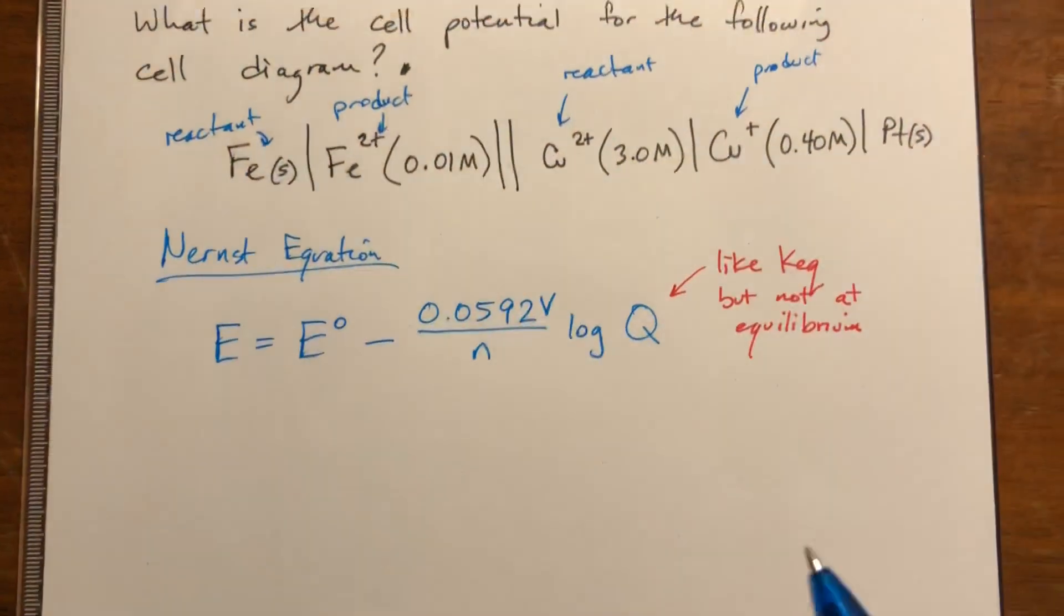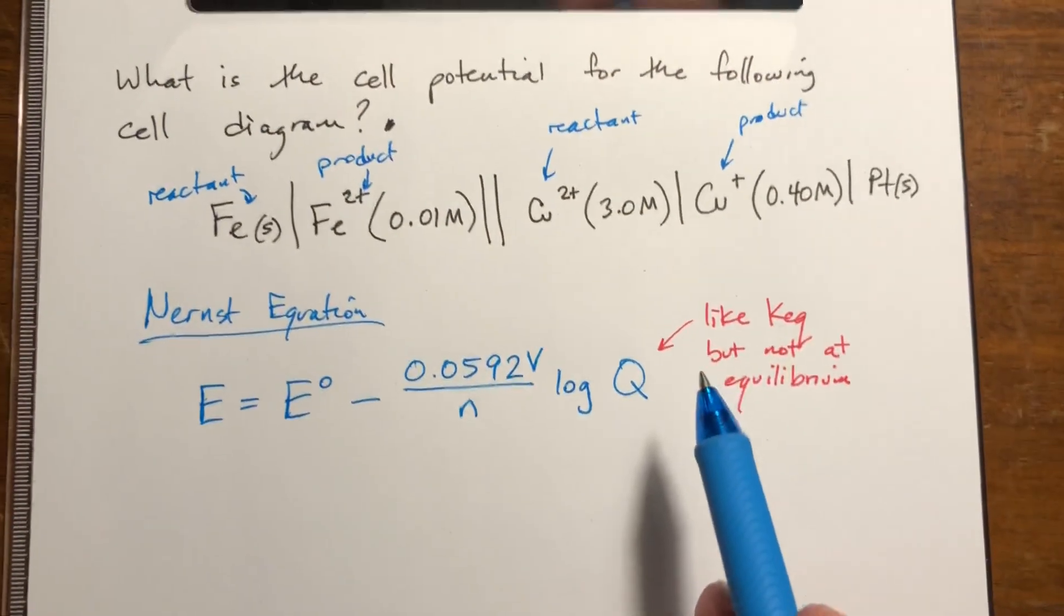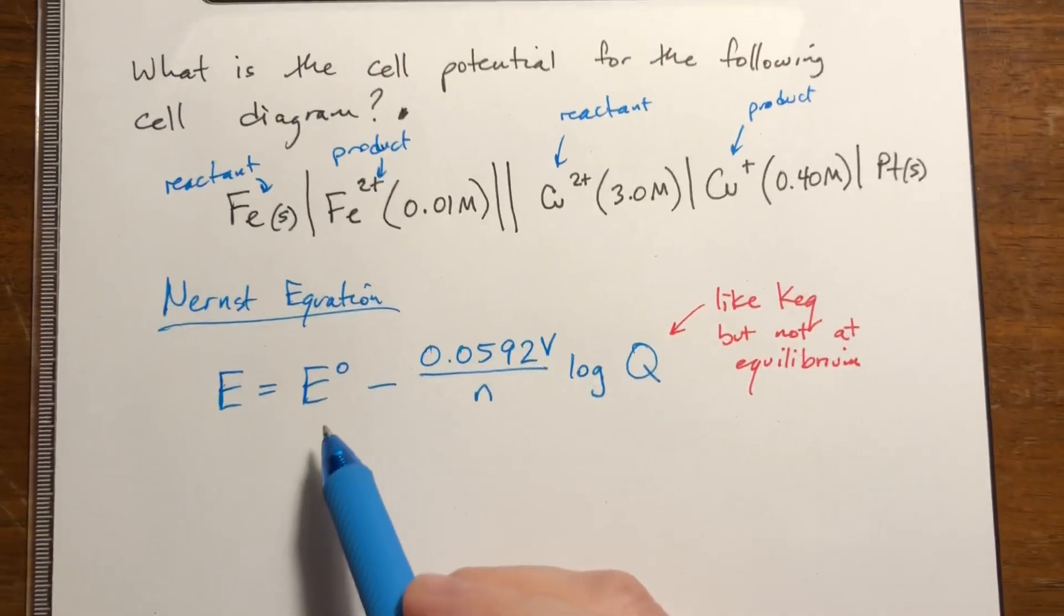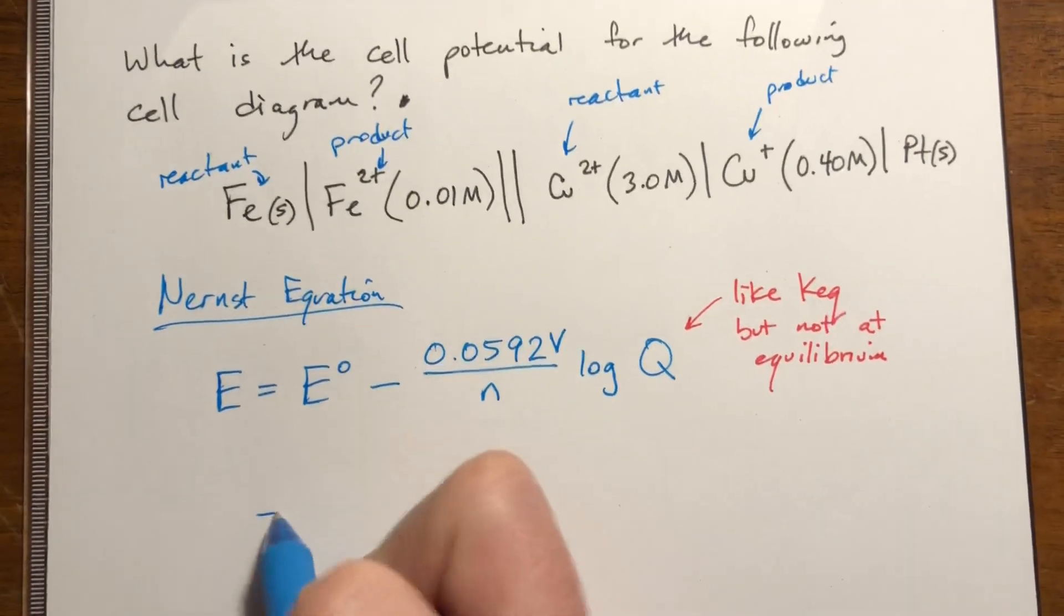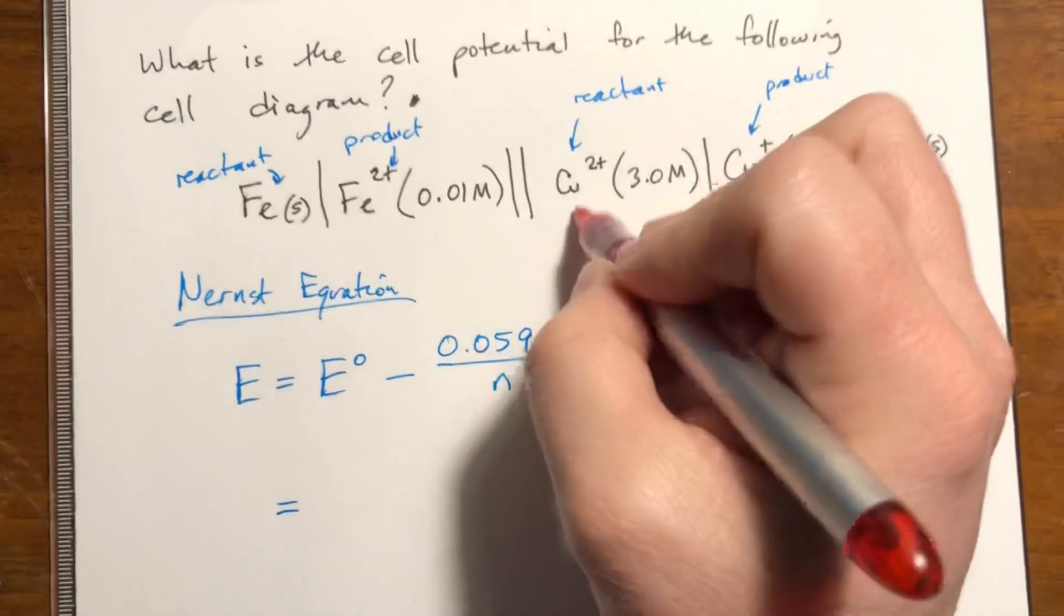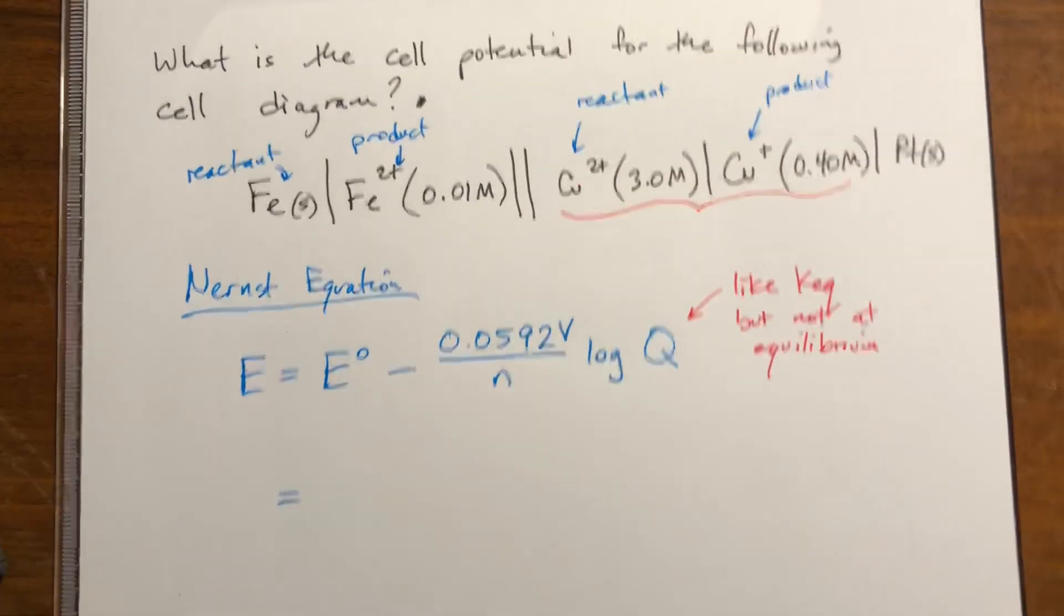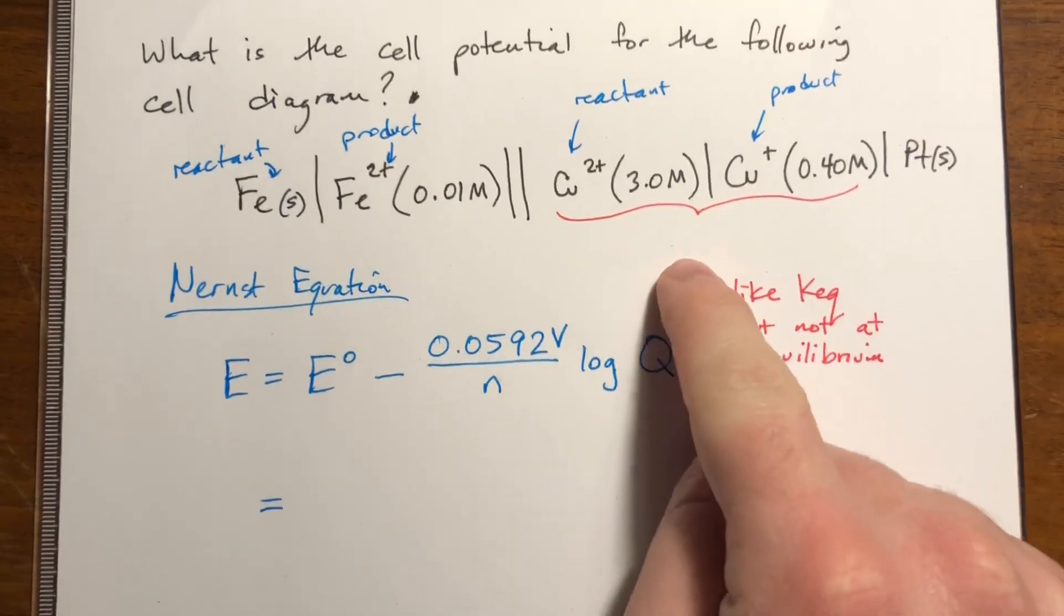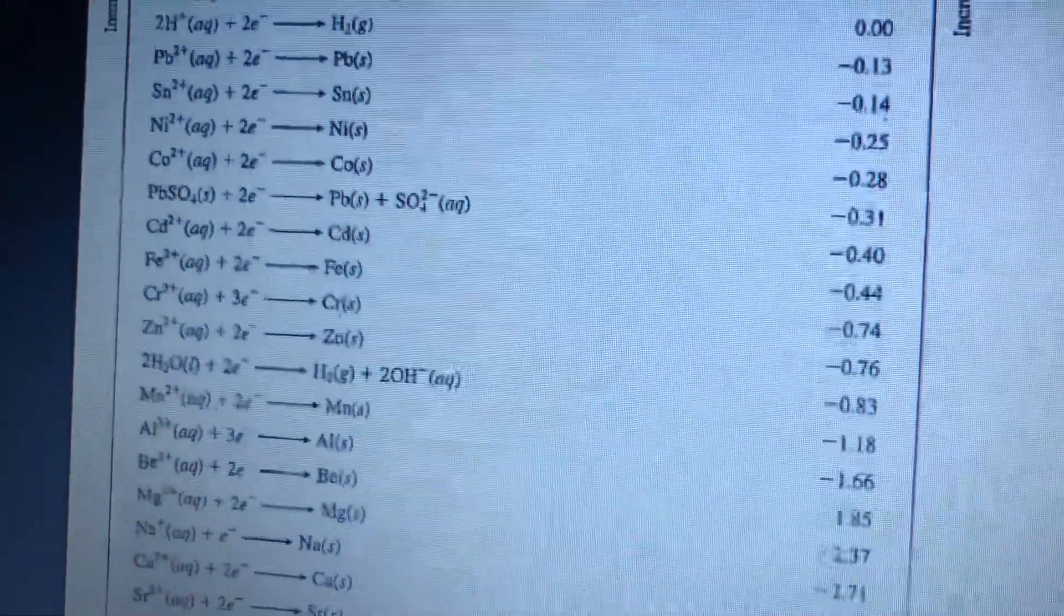So, essentially what we're going to do is first thing I'm going to solve for this standard conditions. So this is taking the right side cell potential minus the left. I'm gonna switch colors a lot here, sorry. So this copper one, if it was at standard conditions, we saw this in the previous problem.